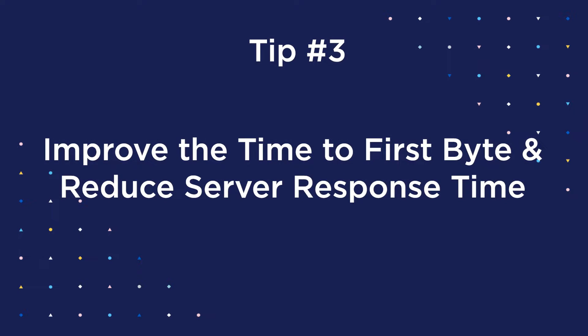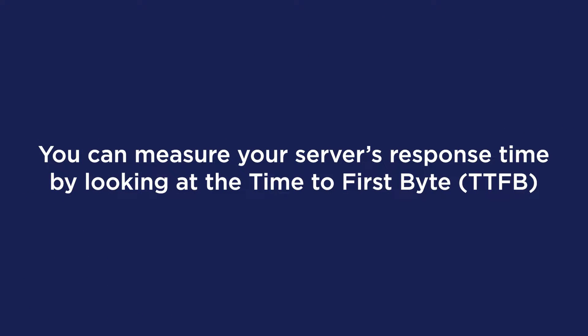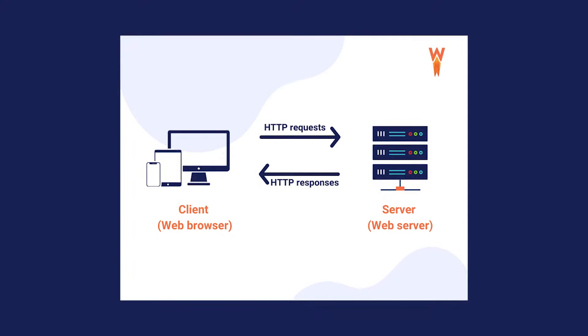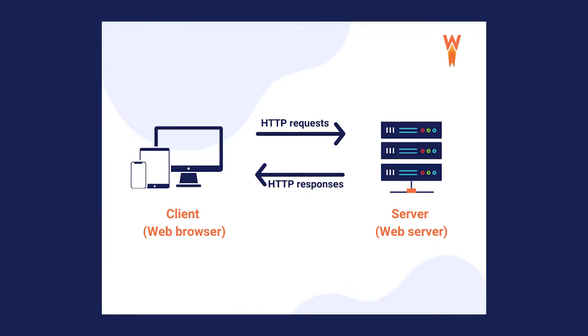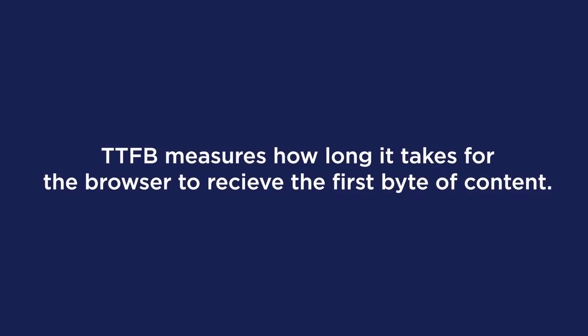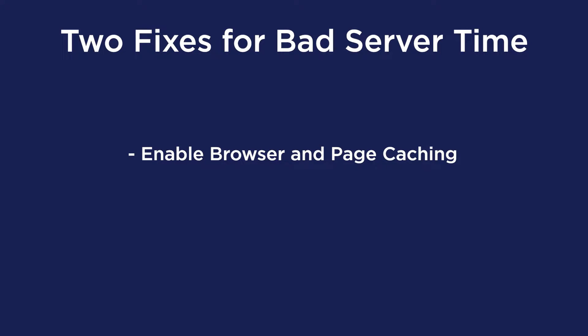One of the main reasons for a bad LCP score is a slow server response time. You can measure your server's response time by looking at the Time to First Byte, or TTFB. Every time you want to consume any piece of content, the browser sends a request to the server, and the TTFB measures how long it takes for the browser to receive the first byte of content. By improving your TTFB, you'll improve server response time and the LCP score. There are two ways to fix a bad server time: enable browser and page caching, or choose a fast hosting service.